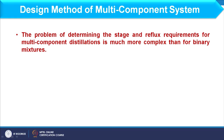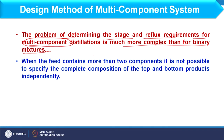When we focus on a multi-component system, the problem of determining the number of stages and the reflux requirement for such a system is much more complex compared to when we calculate these for a binary system. In a multi-component system, if we have more than two components, we cannot get the complete composition of the top and bottom product independently. Some products will be available at the top and some at the bottom, whereas in the binary system we may get a clear composition at both top and bottom.